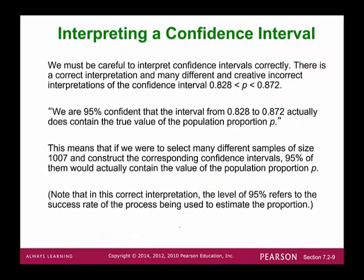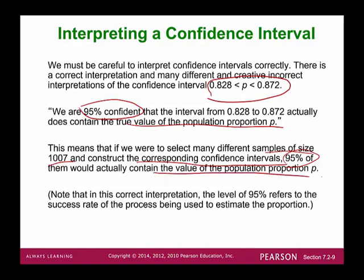Let's show how to interpret a confidence interval. For example: 0.828 < P < 0.872. We are 95% confident that the interval from 0.828 to 0.872 actually does contain the true value of the population proportion P. This 95% also refers to the success rate of the process being used to estimate the proportion.